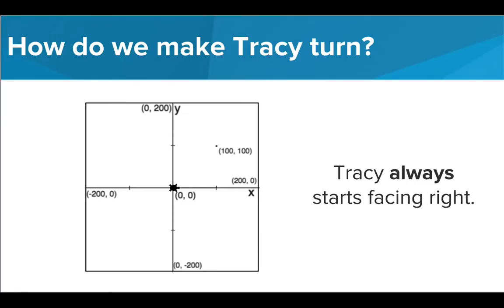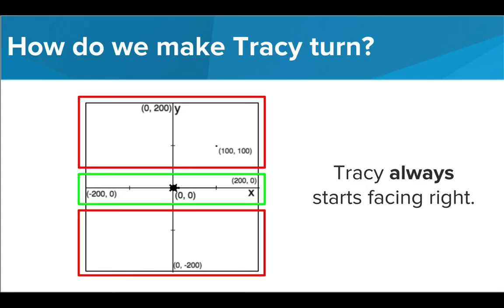We know that Tracy always starts at her home on coordinate. She also always starts facing right. We can use the forward and backward commands to move her, but what if we want Tracy to move to a location that is not on the x-axis? We need to be able to turn Tracy to face different directions, so let's take a look at the turning commands that Tracy knows.